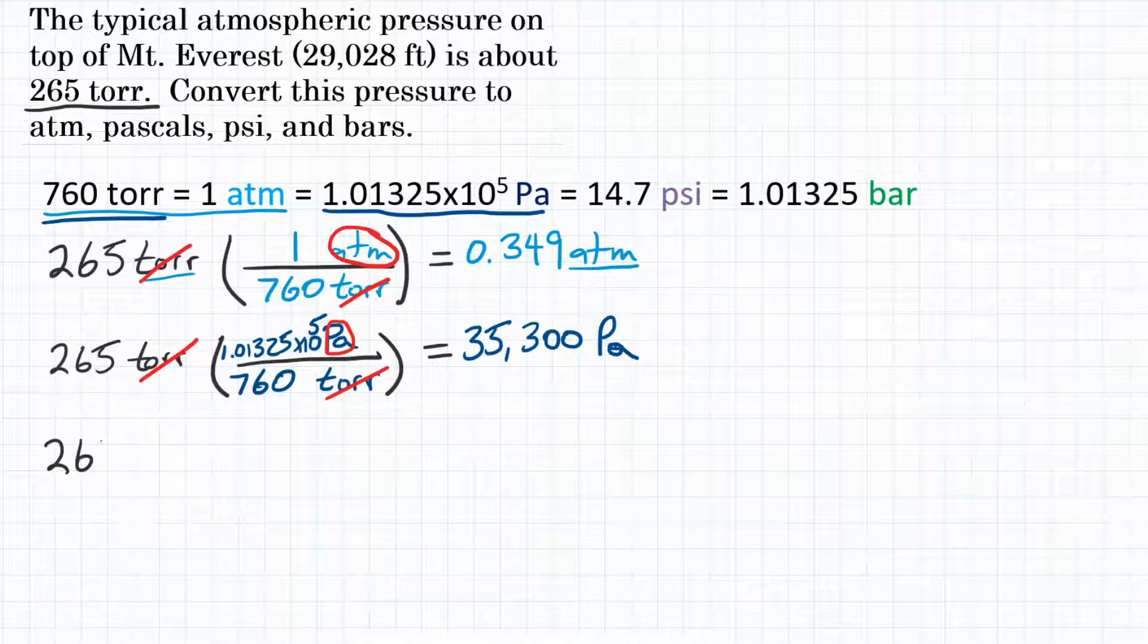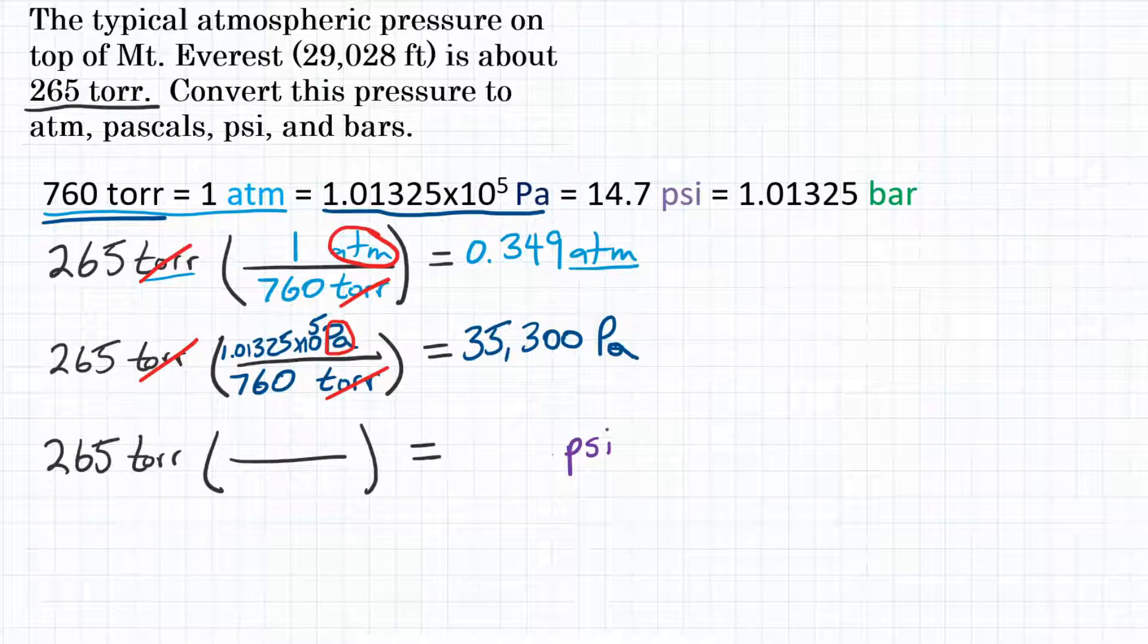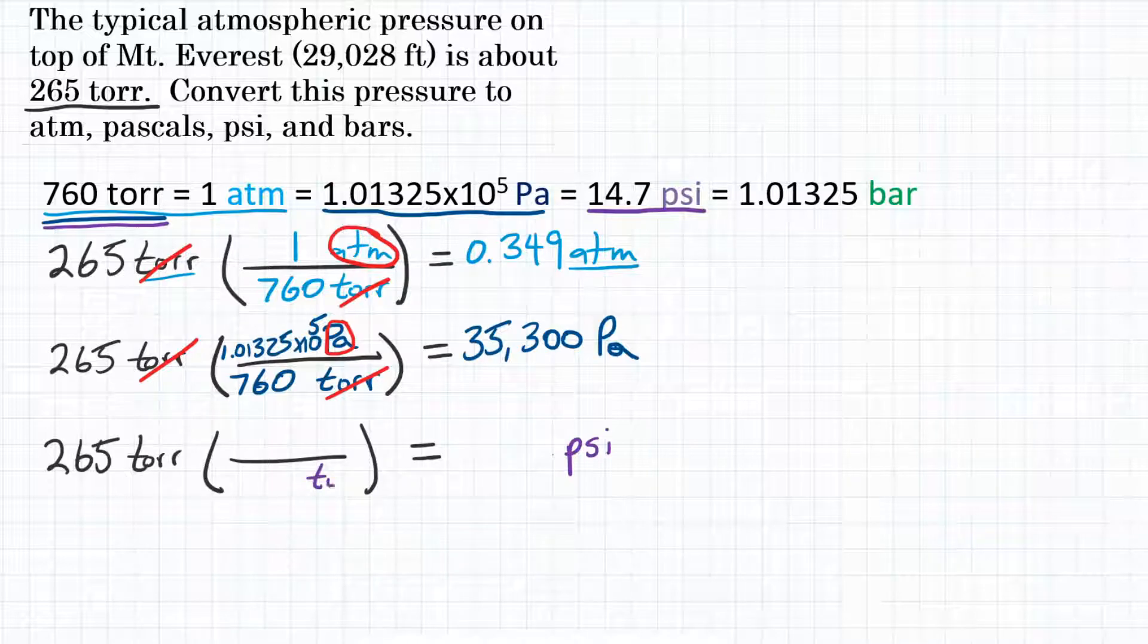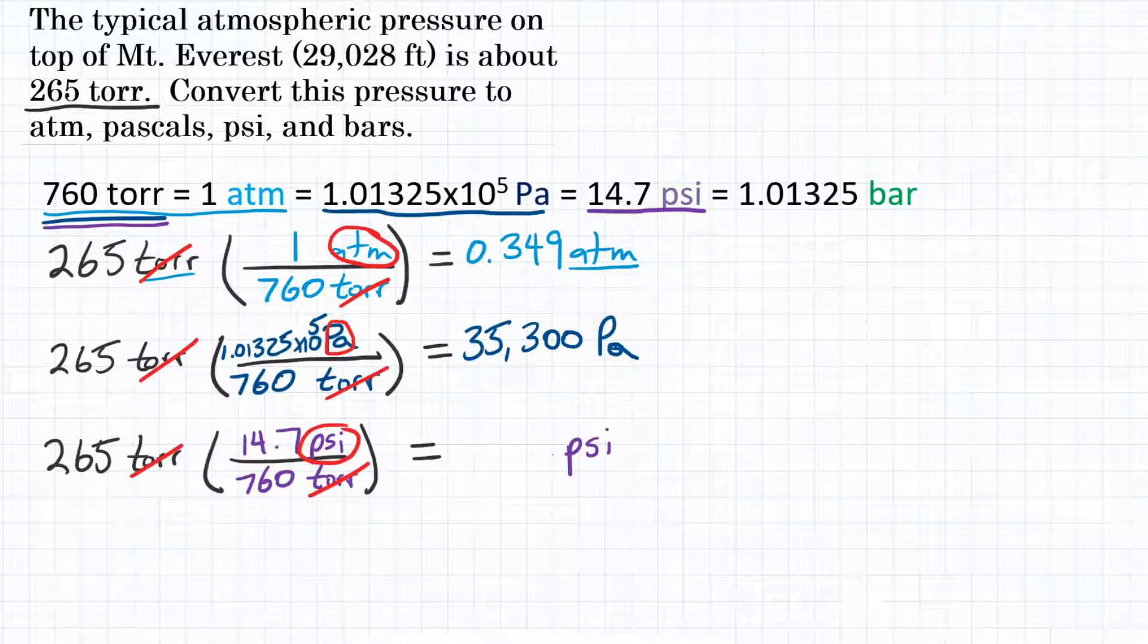Two down, two more to go. Again, 265 torr multiplied by a conversion factor. And we are looking for, in this example, psi. What relationship exists between psi and torr? Well, again, 760 torr, we keep using that same amount there, is equal to 14.7 psi. So torr goes on the bottom, psi goes on top, 760 torr, 14.7 psi. Looking at our units, torr cancels out, and we're left with psi. So now we can do the math.